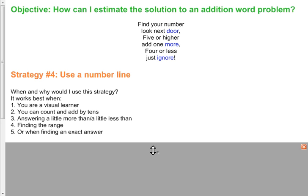If you're a visual learner, I really like to write things down and look at the process. This would be a great strategy. Another reason: if you can add and count by tens, you like multiples of tens, this would be another great strategy for you.